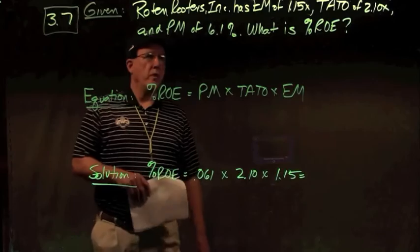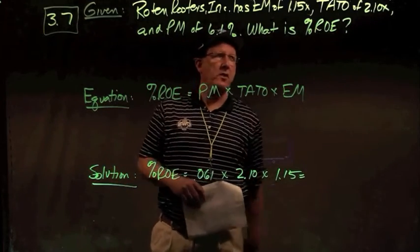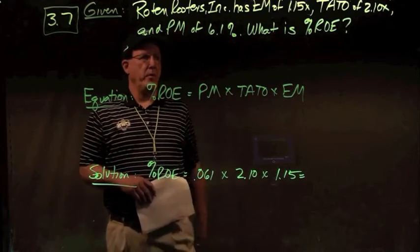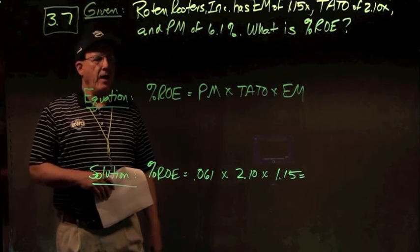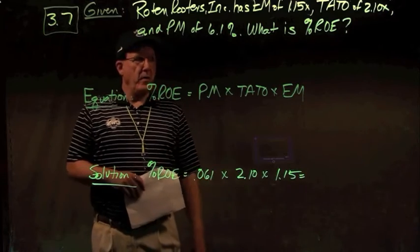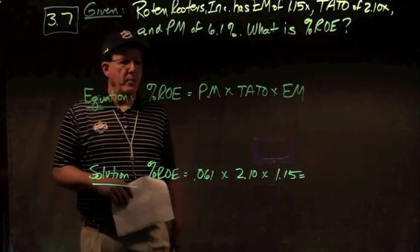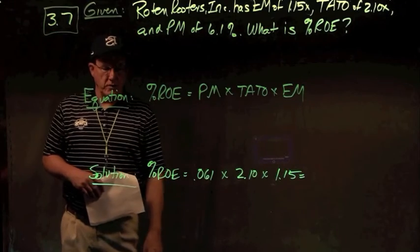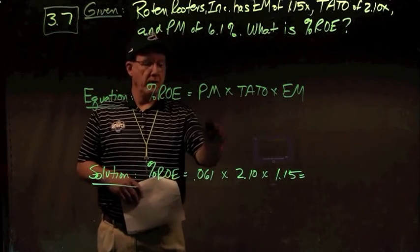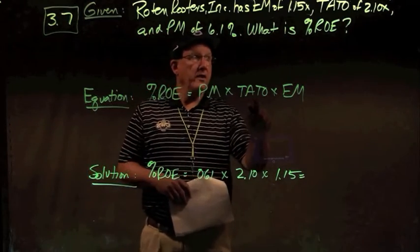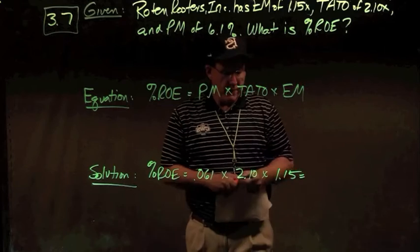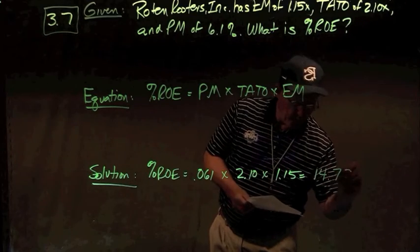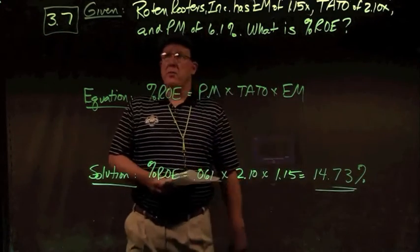In problem 3.7, we have Roten Reuters with equity multiplier of 1.15 times, total asset turnover of 2.1 times, and a profit margin of 6.1%. Using the DuPont identity, return on equity equals profit margin times total asset turnover times equity multiplier: 0.061 × 2.1 × 1.15 gives a return on equity of 14.73%. There is your answer to problem number seven.